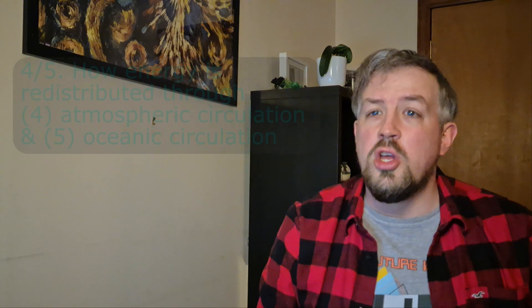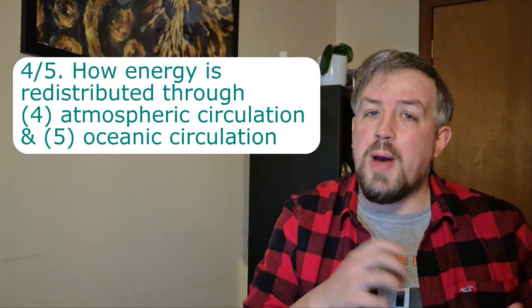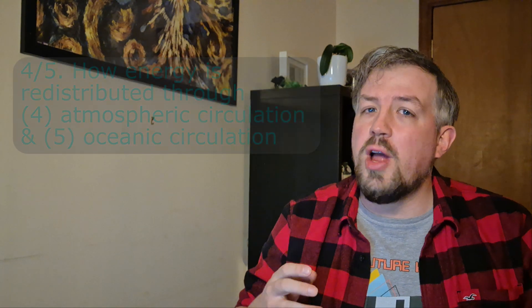Parts four and five: once you have an idea about these variations, we then need to look at how our Earth balances out — how it takes a surplus from the equator and moves it to the poles. It does this through atmospheric circulation, which is air movement in our atmosphere that takes surplus heat from the hot equator to the cold poles and vice versa. Oceanic circulation involves movement within sea or ocean currents, moving energy between the poles and the equator.